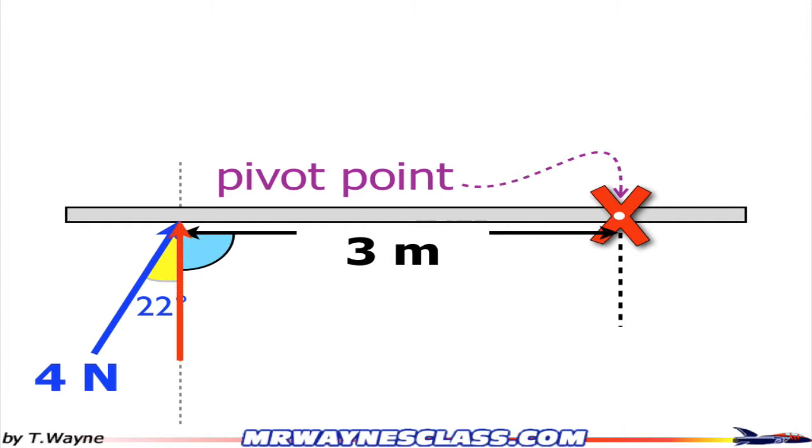That's going to be this red arrow. So this red arrow is the side of a triangle. I'm going to treat the 4 newtons like it's the hypotenuse of a right triangle, and I can see from my picture that the red arrow is adjacent to the 22 degrees, which means I'm going to have to use the cosine function to figure out its length or its magnitude.